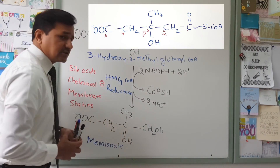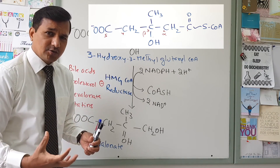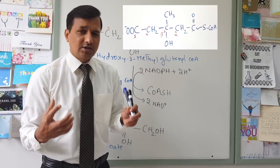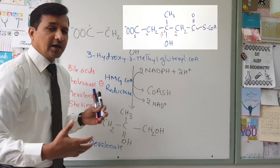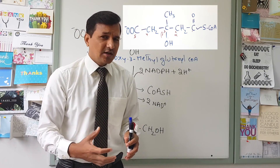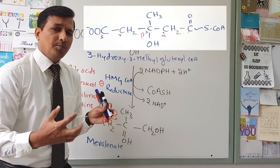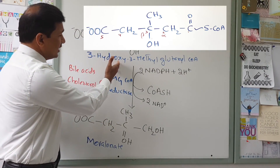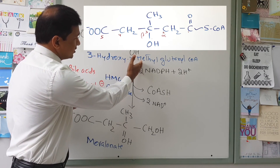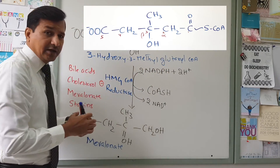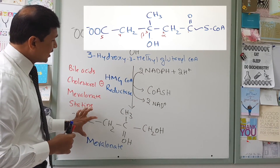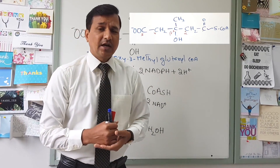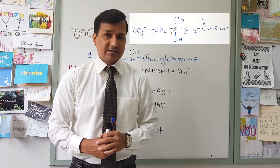The immediate end product, mevalonate, whenever there is accumulation of mevalonate in the hepatocytes, it itself will have a negative effect on HMG-CoA reductase. Also, drugs — that is statins, like mevastatin, lovastatin, and atorvastatin — will have a competitive, reversible negative effect on HMG-CoA reductase. Statins compete with the natural substrate HMG-CoA for the enzyme binding site. If statins bind to the active site of HMG-CoA reductase, there will be no formation of mevalonate, meaning cholesterol biosynthesis decreases.